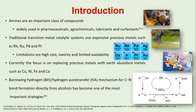The various transition metal catalytic systems developed for the N-alkylation of amines using alcohols are based on precious metals such as rhodium, ruthenium, palladium, and platinum. These metals have limitations and pose serious concerns such as their high cost, limited availability, and toxicity.